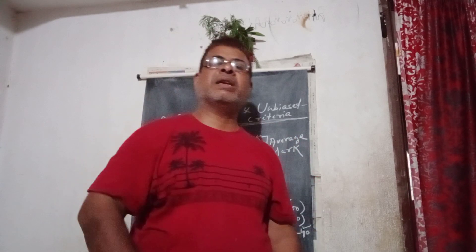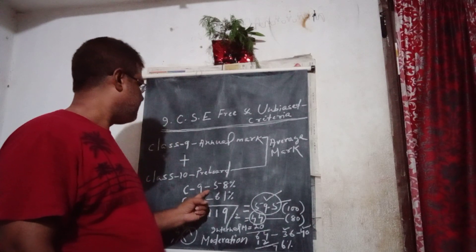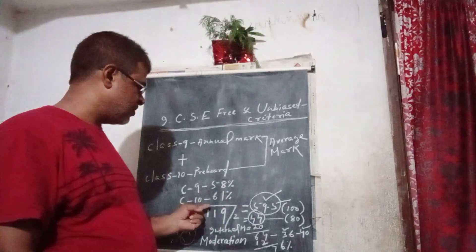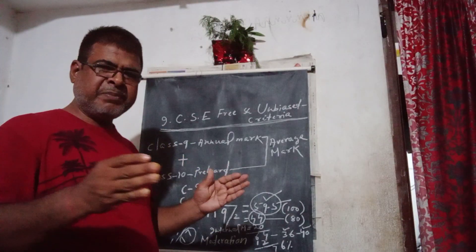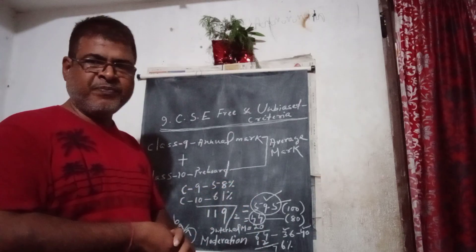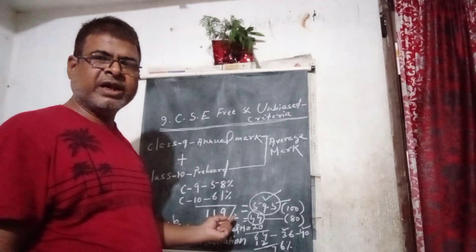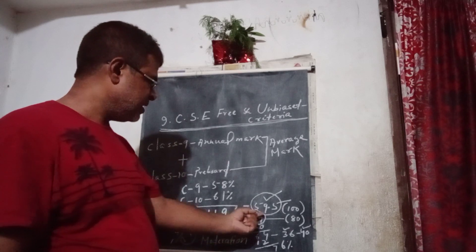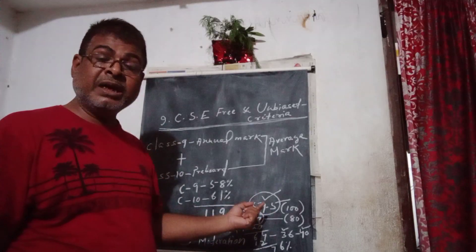Now suppose one student has secured 58% in the Class 9 annual exam, and in Class 10 pre-board he has got 61%. So Class 9 is 58 and Class 10 pre-board is 61. We add them: 58 + 61 = 119, then divide by 2, and we get the average percentage of 59.5 out of 100.